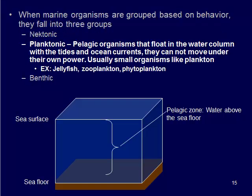The next type is planktonic. These are also living in the pelagic zone. The difference between planktonic and nectonic is that planktonic organisms can't move on their own — they are at the whim of ocean currents and tides, so they can't move under their own power. These are usually pretty small organisms, such as plankton, jellyfish, certain species at different stages of life. Zooplankton, phytoplankton — these are all organisms at the whim of ocean currents but living in that pelagic zone.